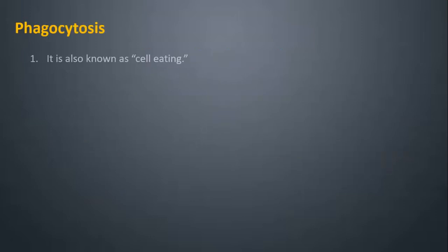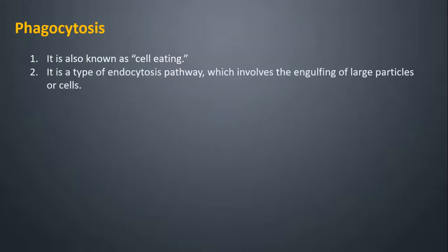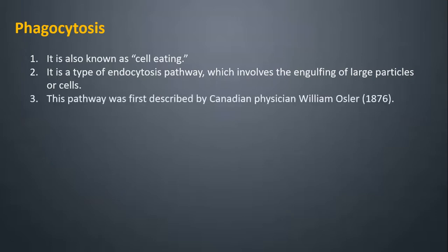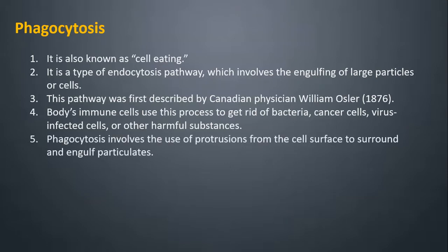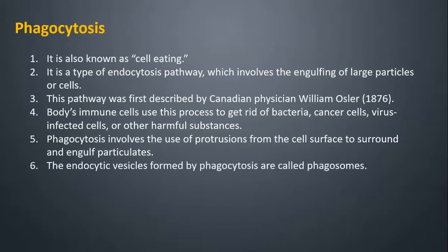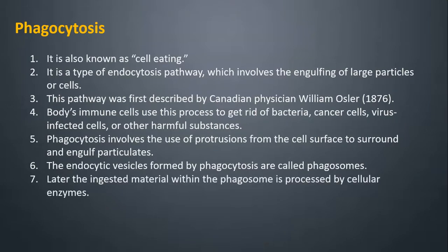Phagocytosis: It is also known as cell eating. It is a type of endocytosis pathway which involves the engulfing of large particles or cells. This pathway was first described by Canadian physician William Wassler in 1876. The body's immune cells use this process to get rid of bacteria, cancer cells, virus-infected cells, or other harmful substances. Phagocytosis involves the use of protrusions from the cell surface to surround and engulf particulates. The endocytic vesicles formed by phagocytosis are called phagosomes. Later, the ingested material within the phagosome is processed by cellular enzymes.